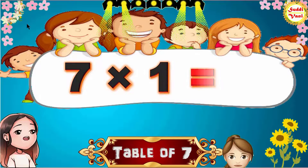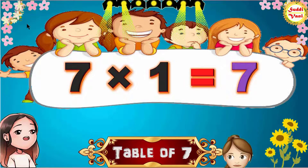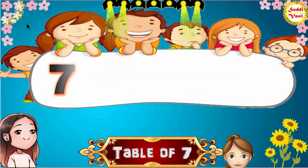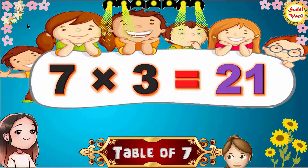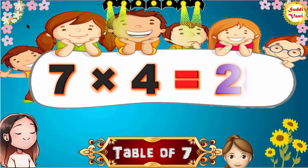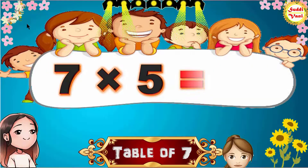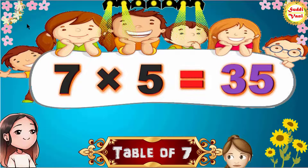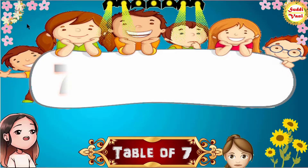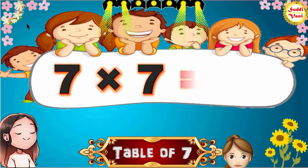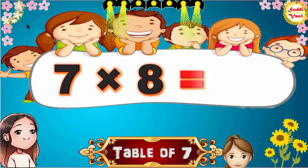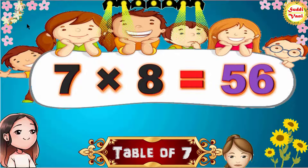7 1s are 7, 7 2s are 14, 7 3s are 21, 7 4s are 28, 7 5s are 35, 7 6s are 42, 7 7s are 49, 7 8s are 56.